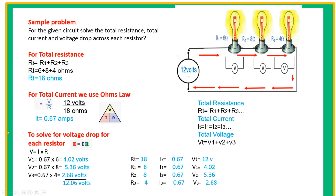For the current, we use Ohm's Law: I equals V over R. Our voltage is 12 volts and our resistance is 18 ohms, so our current is 0.67 amps. In a series circuit, the total current is equal to the individual current throughout. Total voltage is the sum of individual voltage drops.